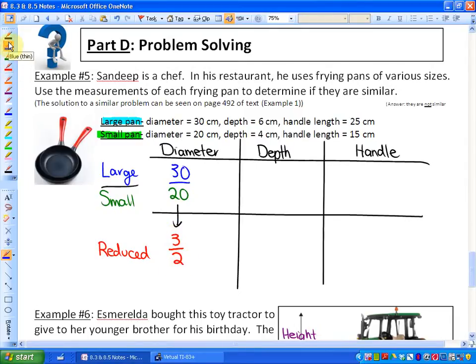If we look at the depth of each, the large pan has a depth of 6 and the small pan has a depth of 4. That reduces to a proportion of 3 to 2. If we look at the handle, the large handle is 25 centimeters, the small handle is 15. That becomes 5 over 3, which can't be reduced anymore. So the answer is it's not similar because the handles don't have the same proportional measurement.